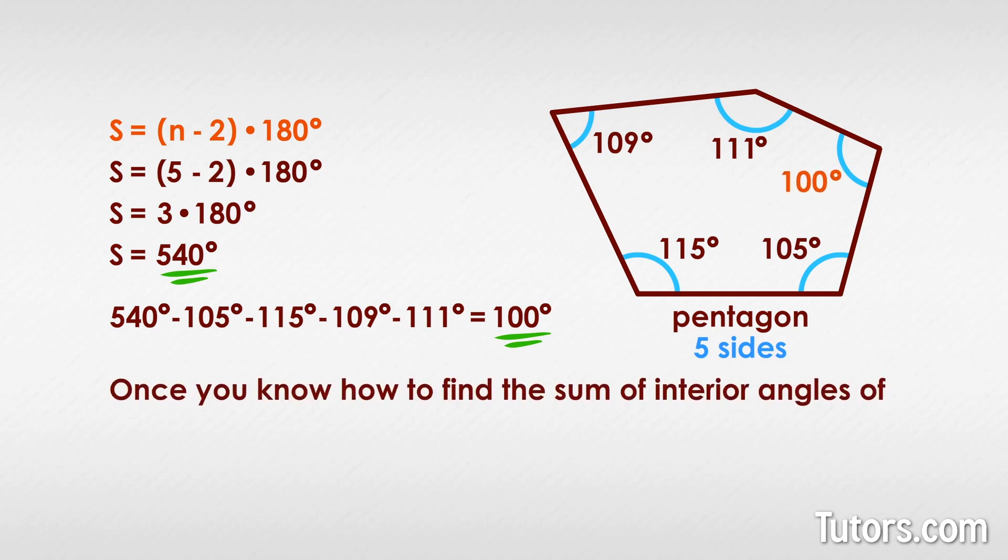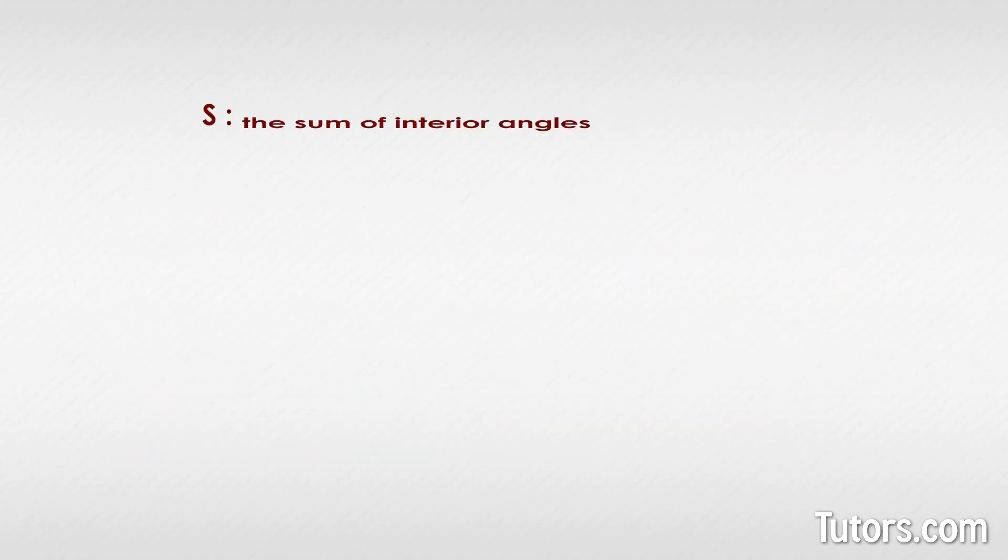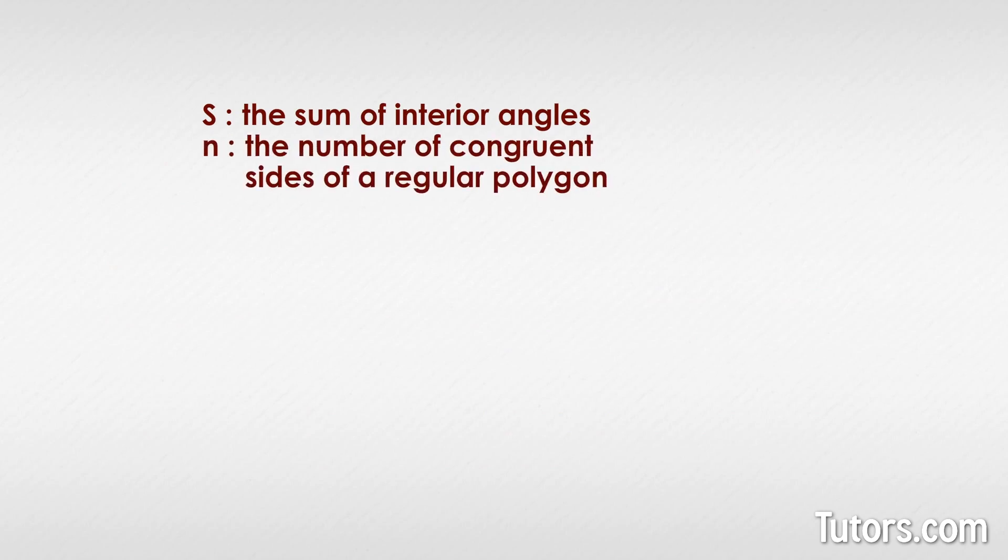Once you know how to find the sum of interior angles of a polygon, finding one interior angle of any regular polygon is just a matter of dividing. Where S equals the sum of the interior angles and N equals the number of congruent sides of a regular polygon, the formula is S divided by N.